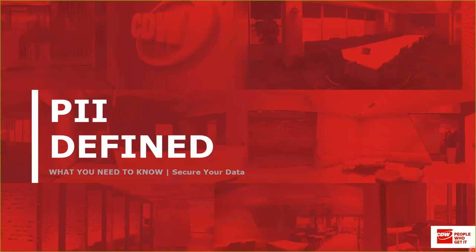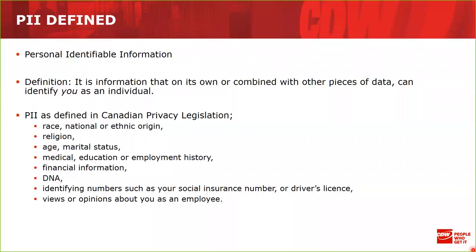PII stands for personally identifiable information. When you collect information on an individual for business needs, you have to protect that information, as it can potentially cause harm to the individual from whom it was collected. Our privacy legislation defines it as: race, national or ethnic origin, religion, age, marital status, medical, education, or employment history — among others. These pieces of information individually may mean nothing, but in combination with one another, they build a picture of an individual. When collected as a whole, we must protect them.